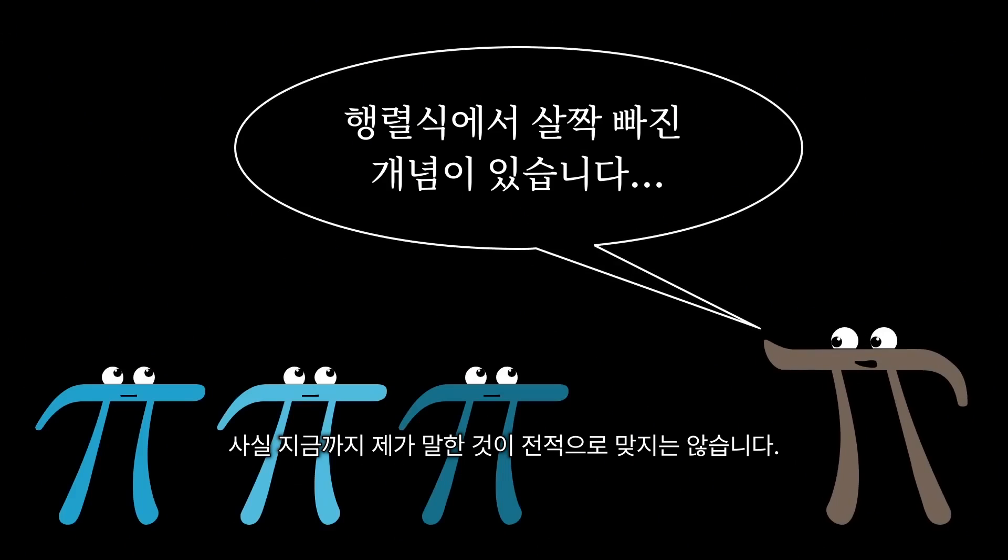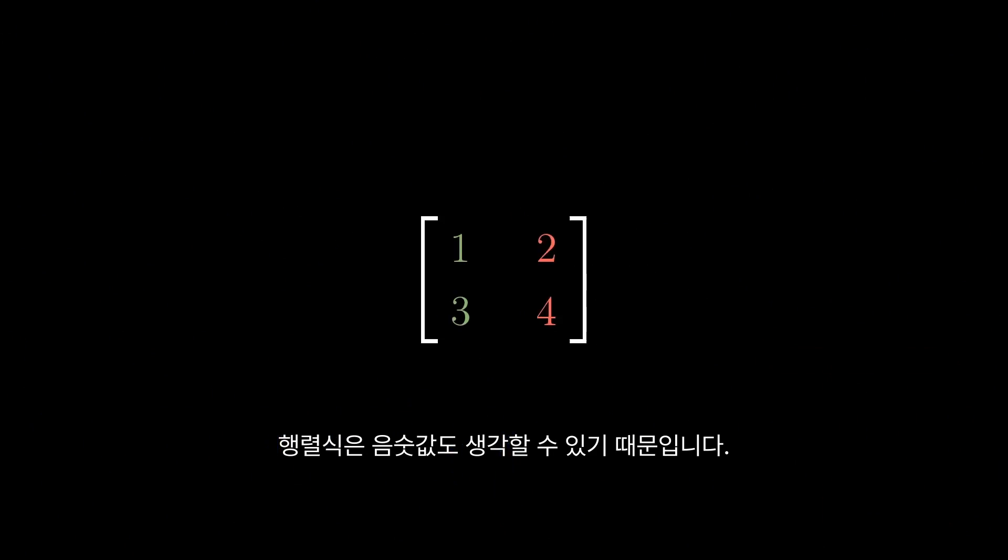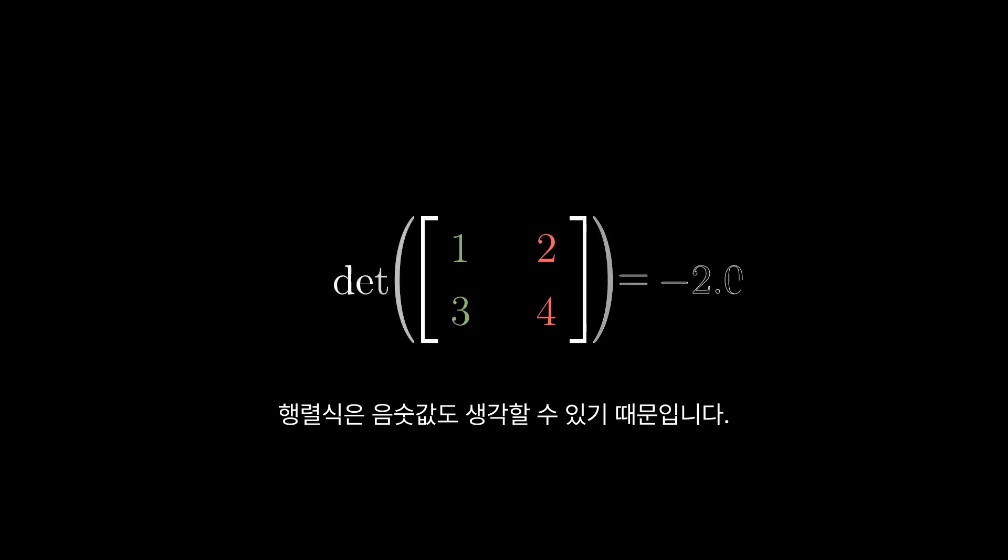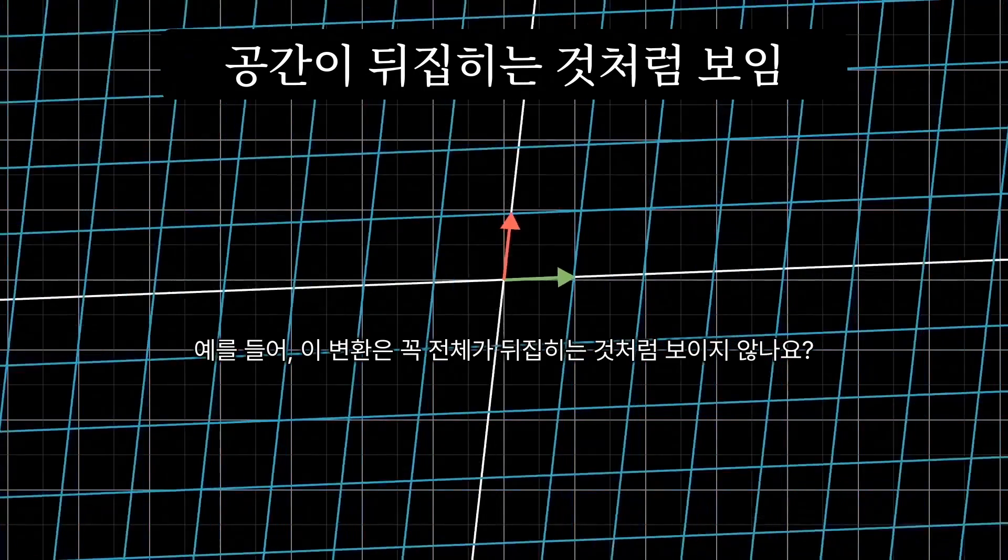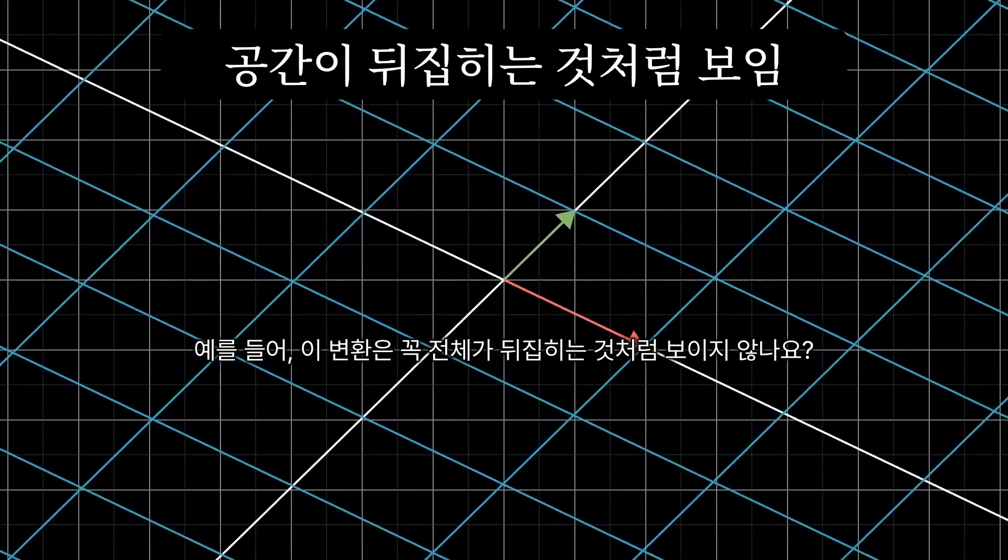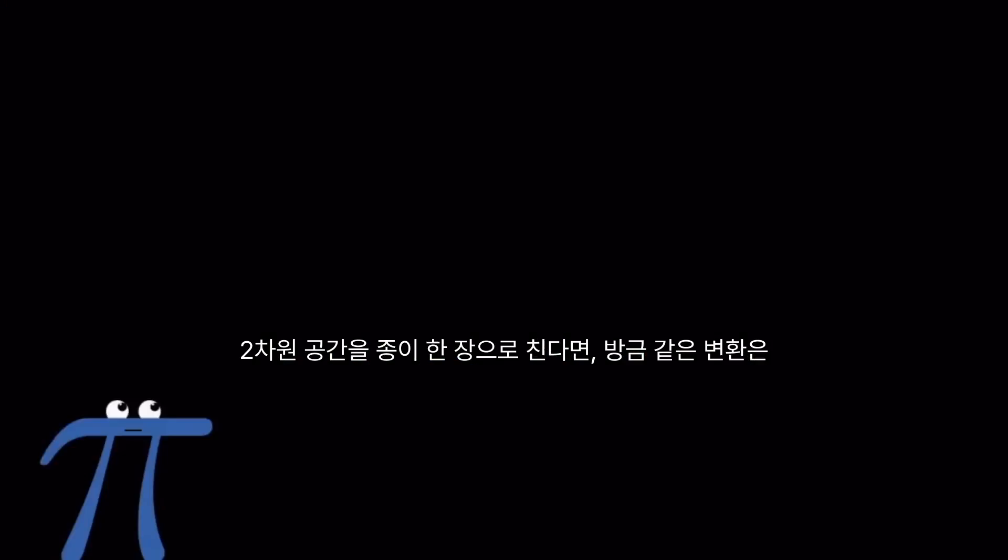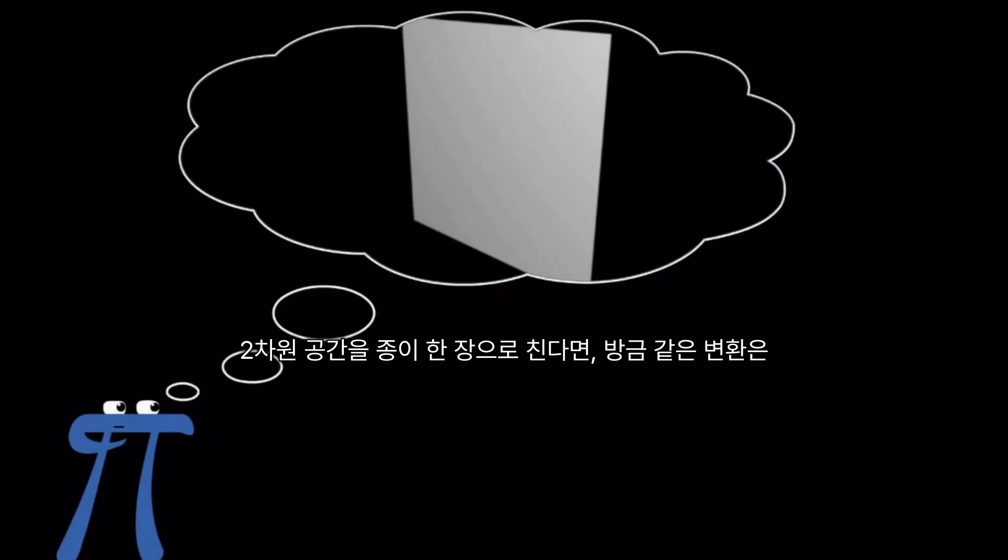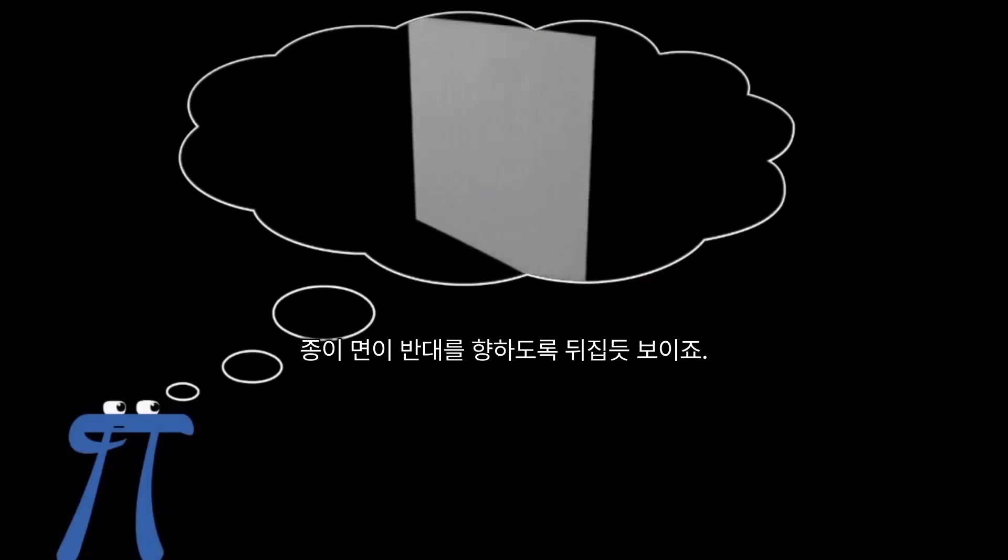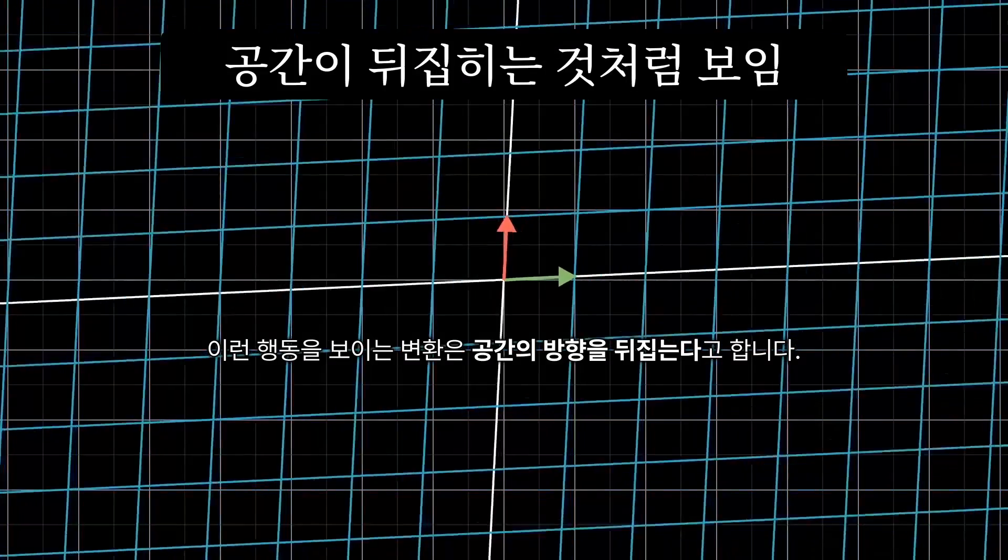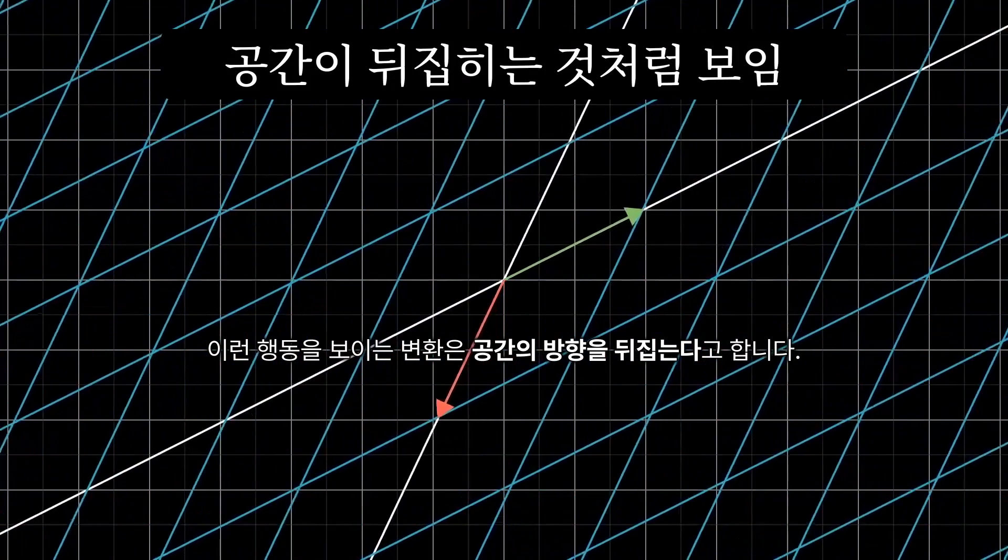Okay, I need to confess that what I've said so far is not quite right. The full concept of the determinant allows for negative values. But what would the idea of scaling an area by a negative amount even mean? This has to do with the idea of orientation. For example, notice how this transformation gives the sensation of flipping space over. If you were thinking of 2D space as a sheet of paper, a transformation like that one seems to turn over that sheet onto the other side. Any transformations that do this are said to invert the orientation of space.